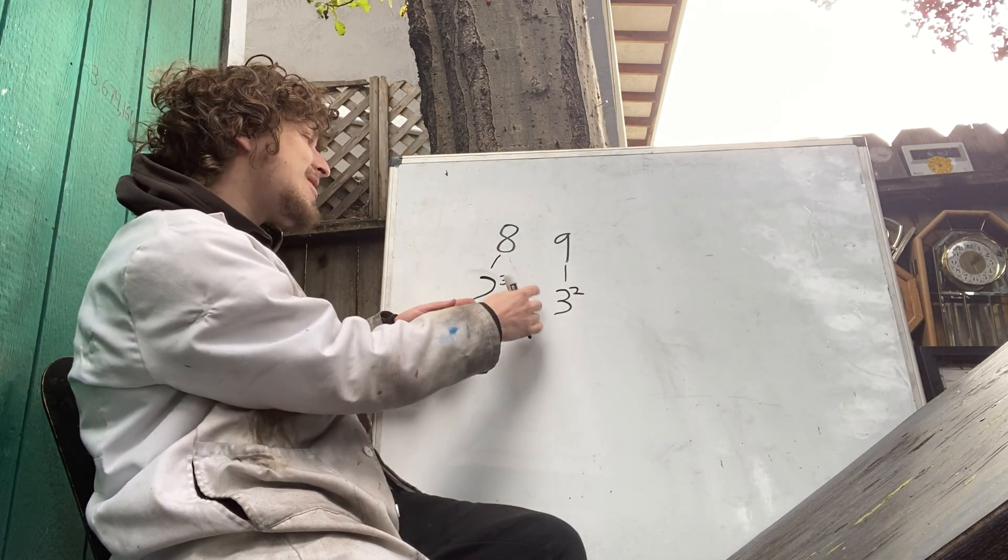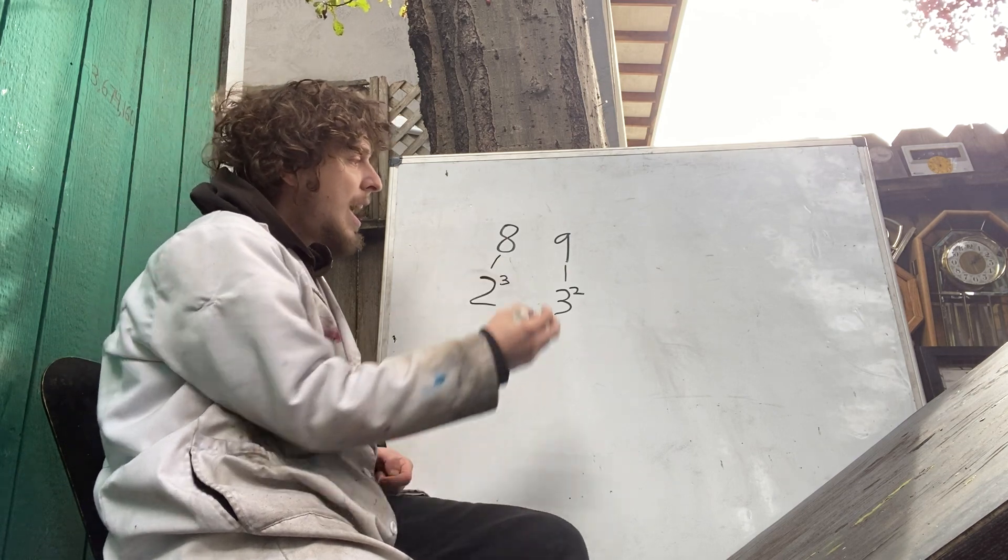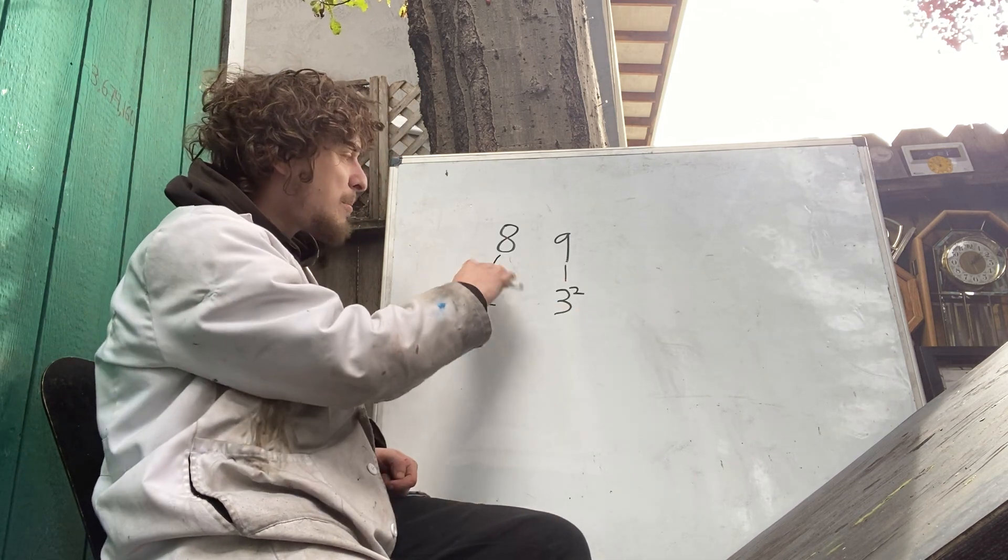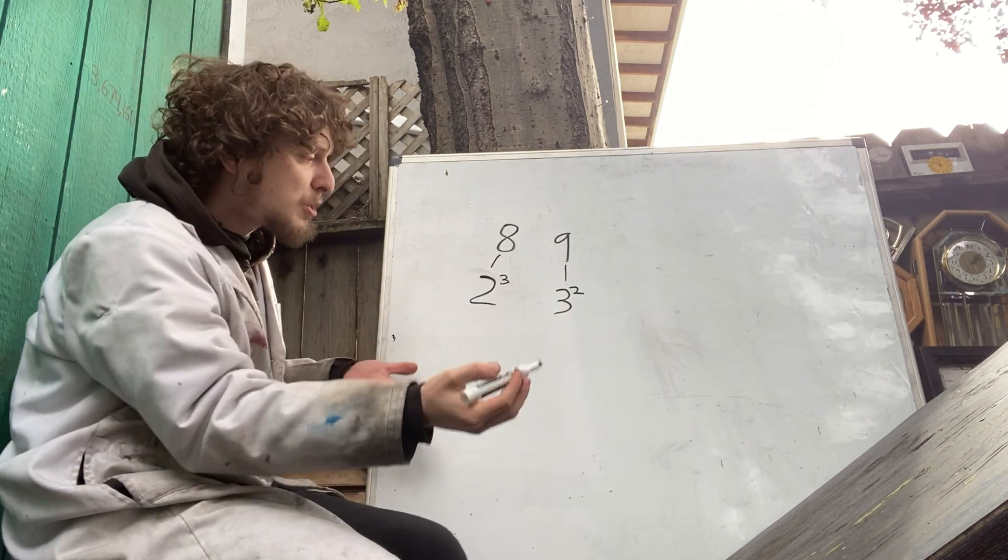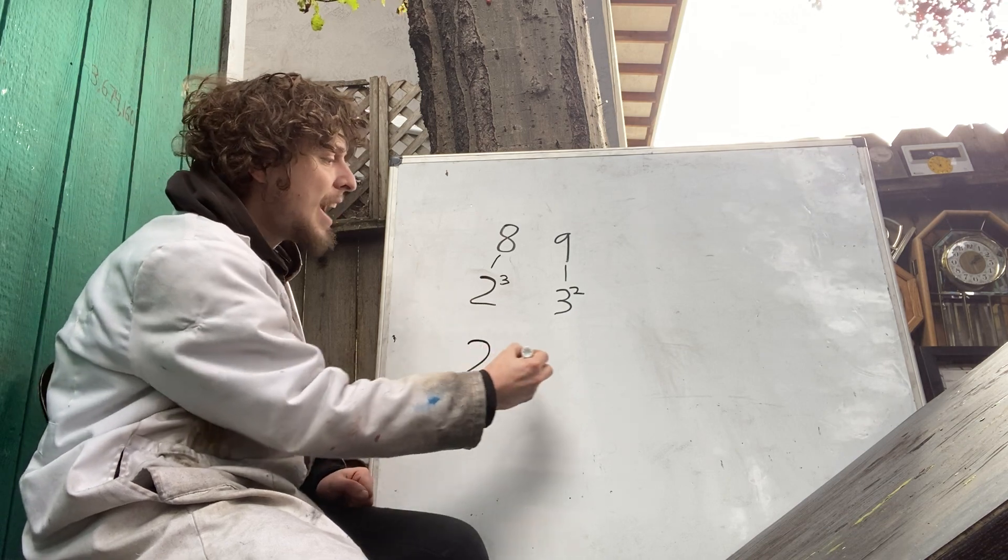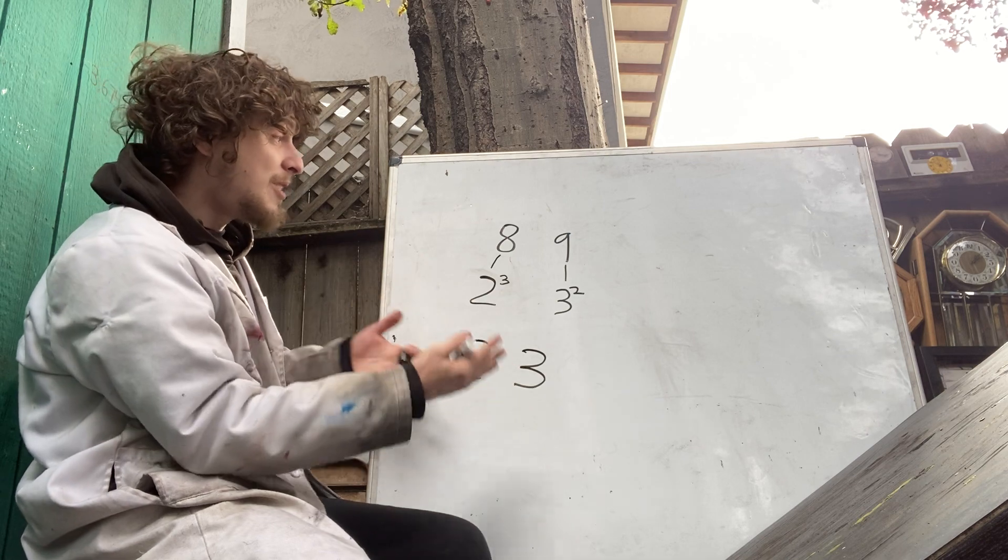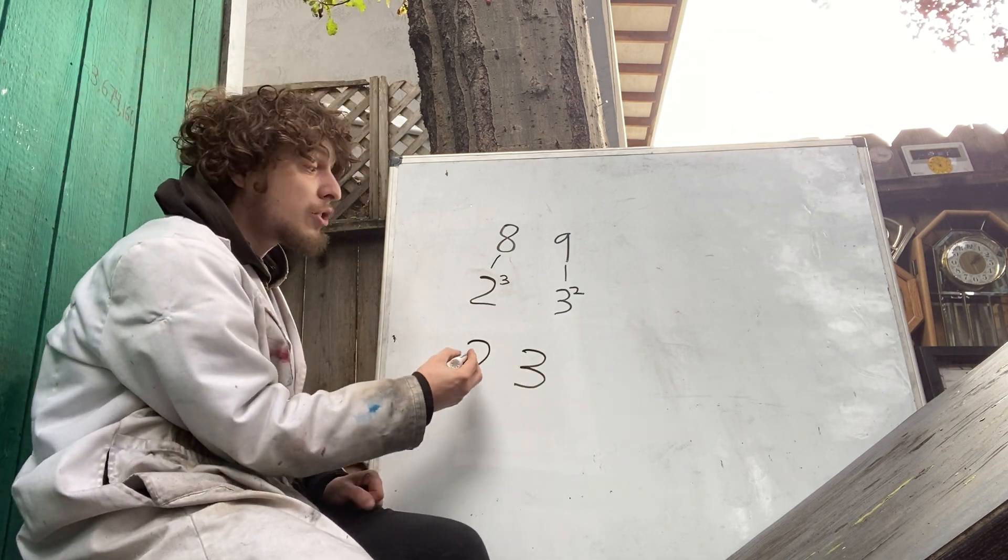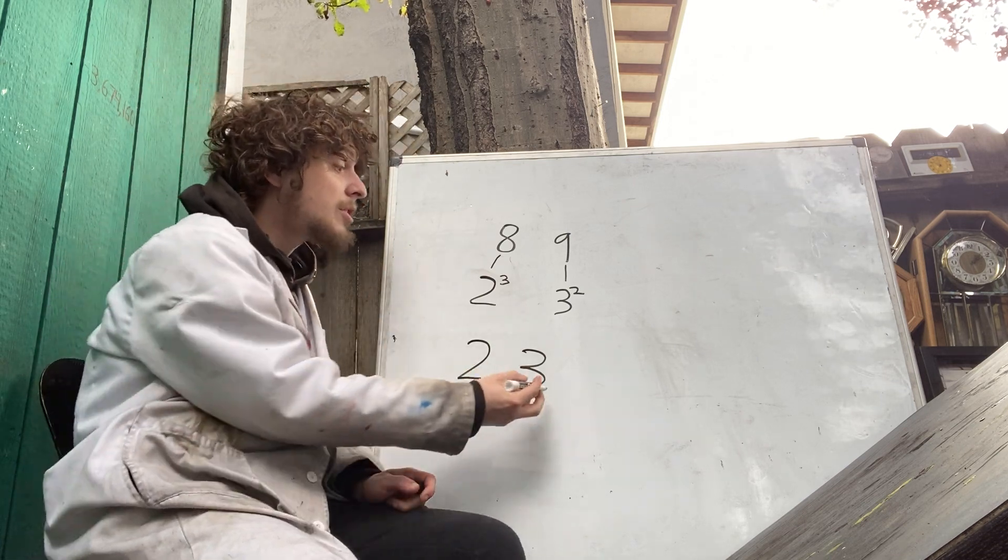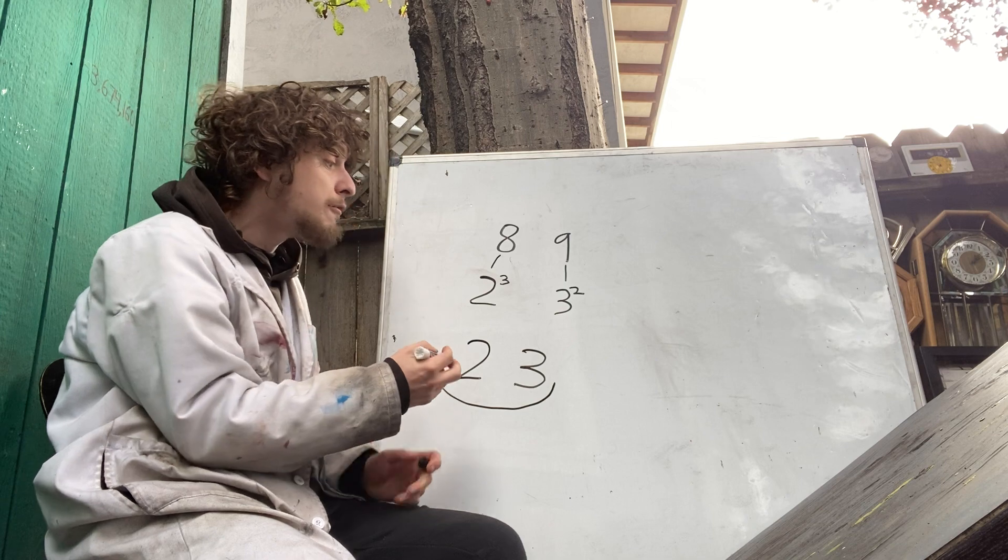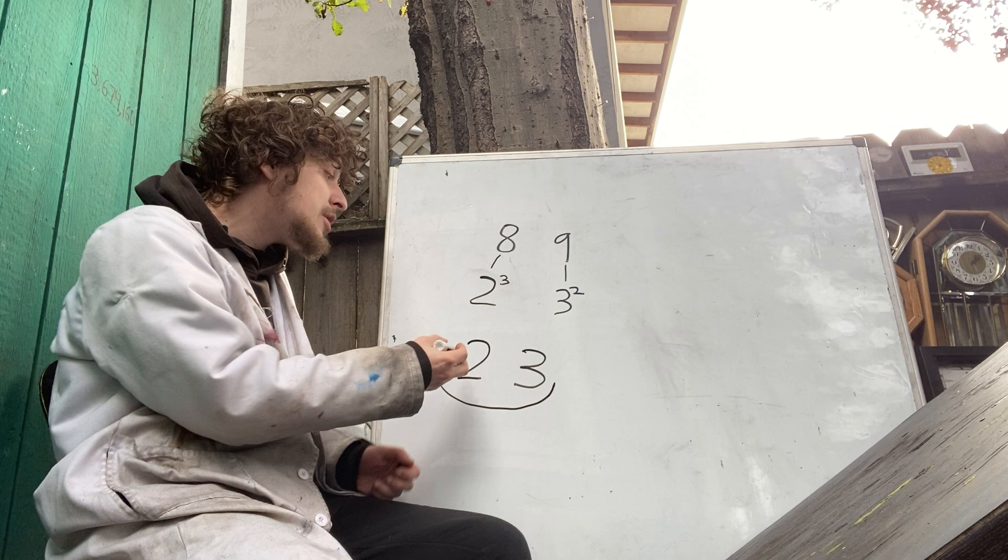Now, do you notice how these sort of look like the flip of each other? It's 2 to the 3rd power and 3 to the 2nd power. Numbers to each other's power. Now, what are the numbers that we raise to each other's power? 2 and 3. Another set of important neighbor numbers. 2 and 3 also land just one away from each other, and they're very important neighboring numbers, because they're the only set of two neighboring numbers that could both be prime.